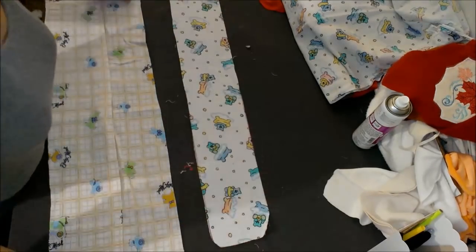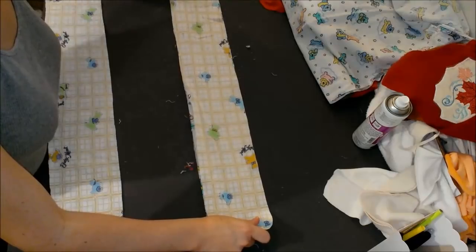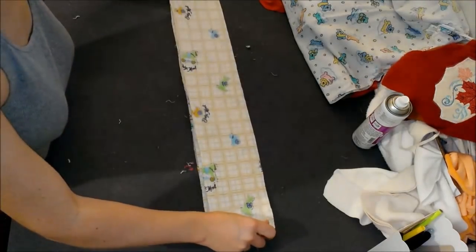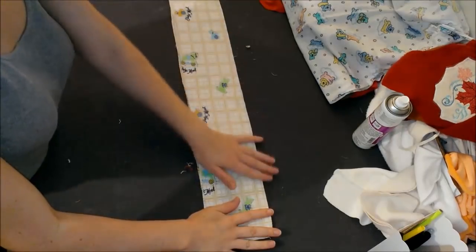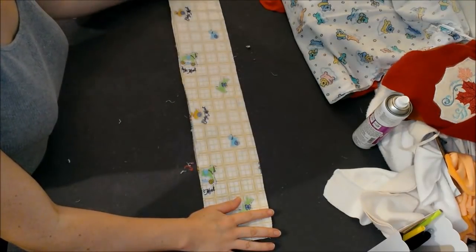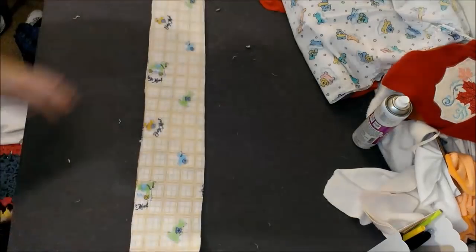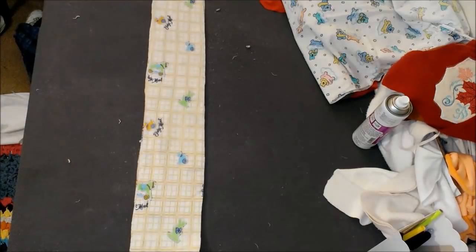So now I have my three long soaker pieces cut out. Normally I would only do two, but since flannel is a little on the thin side, I decided to do three. I'm going to place them all together, and now I'm going to go serge them.